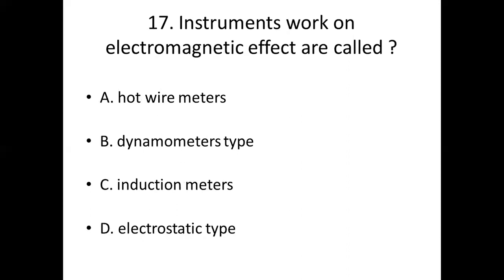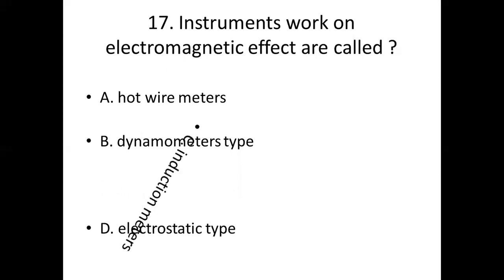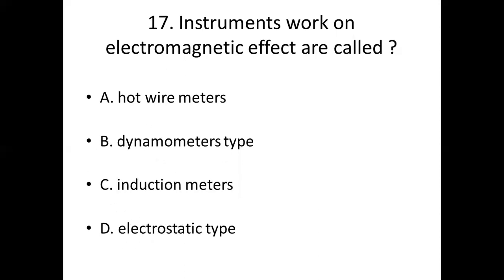Seventeenth bit. Instruments that work on electromagnetic effect are called. Option A: Hot wire meters. Option B: Dynamometer types. Option C: Induction meters. Option D: Electrostatic type. Answer: Option C, Induction meters.